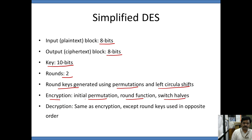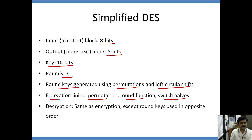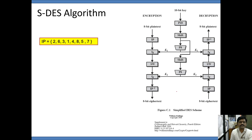Since we perform the initial permutation, we also have an inverse permutation. Decryption is the same as encryption except that the round keys are used in the opposite direction. This is the overall observation of SDES.